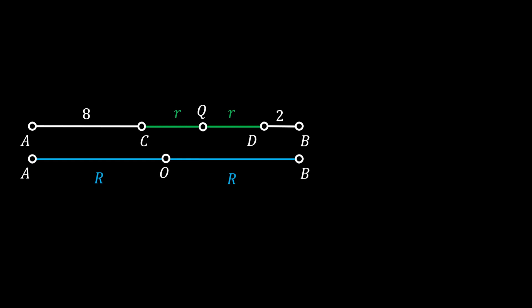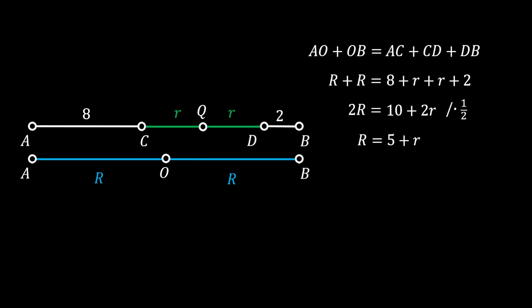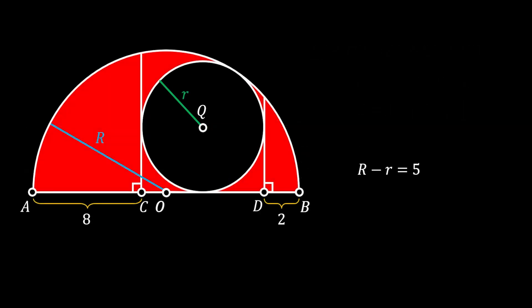Rearranging the lines, we can see two equivalent segments. From here we conclude that OA plus OB equals AC plus CD plus DB. Substituting our values: R + R = 8 + r + r + 2. Simplifying gives 2R = 10 + 2r, and dividing by 2 gives R = 5 + r. So the difference between the radius of the half circle and the full circle is equal to 5.